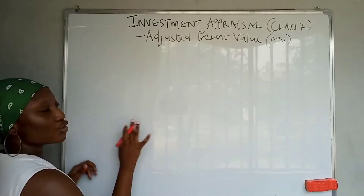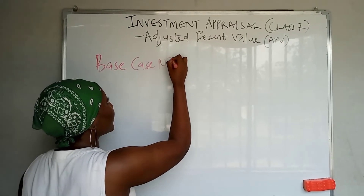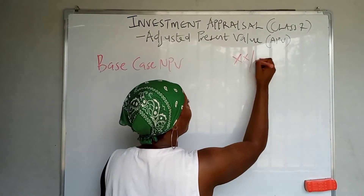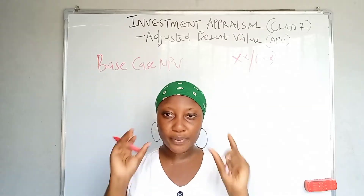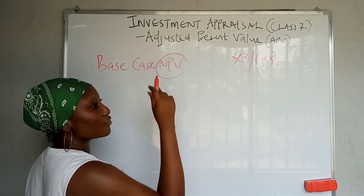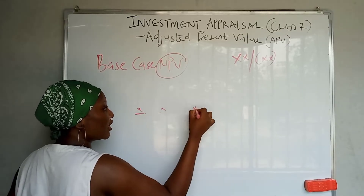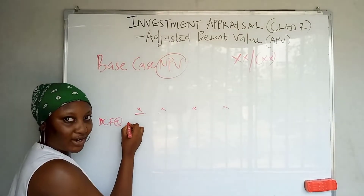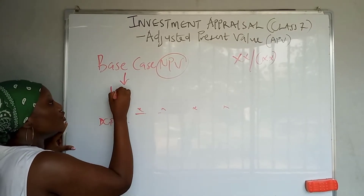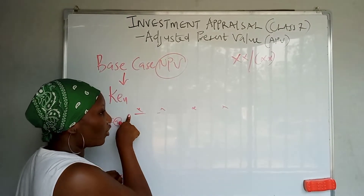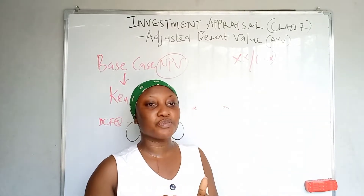The Base Case NPV can be positive or negative. Your Base Case NPV is the NPV obtained by discounting using the cost of equity of an ungeared company — Ke(ungeared). You know when you get your net cash flows for year one, year two, year three, year four, you discount at this rate. The assumption is that we evaluate the project based on the most expensive form of capital.